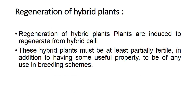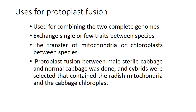Hybrid plants must be at least partially fertile in addition to having some useful property to be of any use in a breeding scheme. Uses of protoplast fusion or somatic hybridization include: combining two complete genomes, exchanging single or few traits between species, transferring mitochondria or chloroplasts between species, and protoplast fusion between male sterile cabbage and normal cabbage.